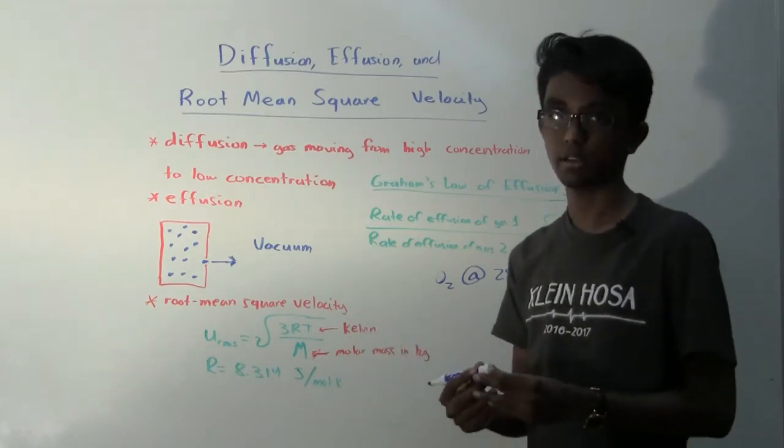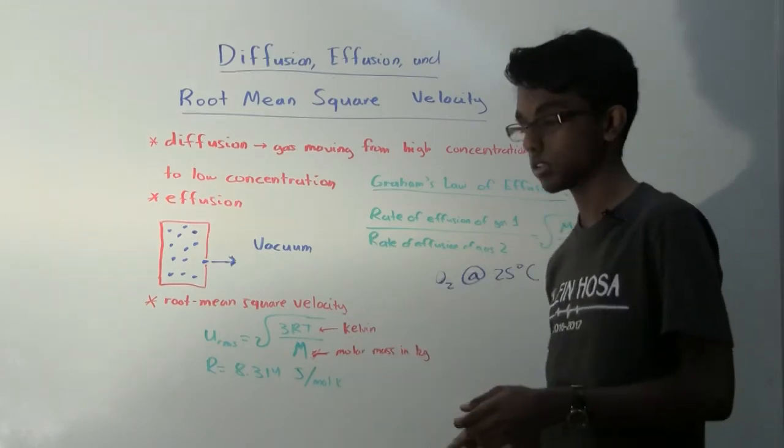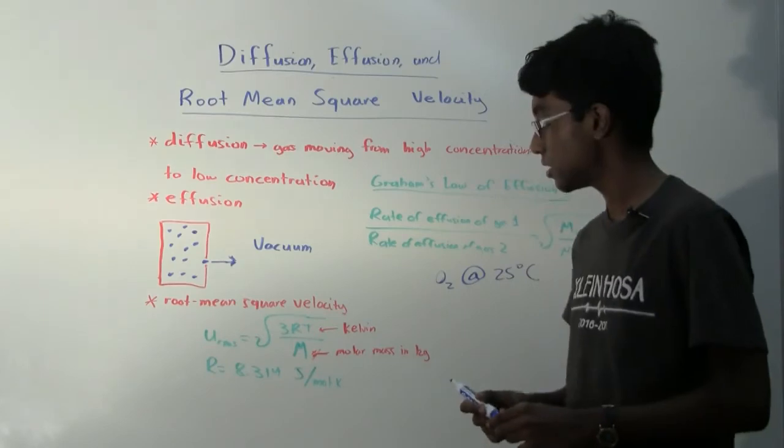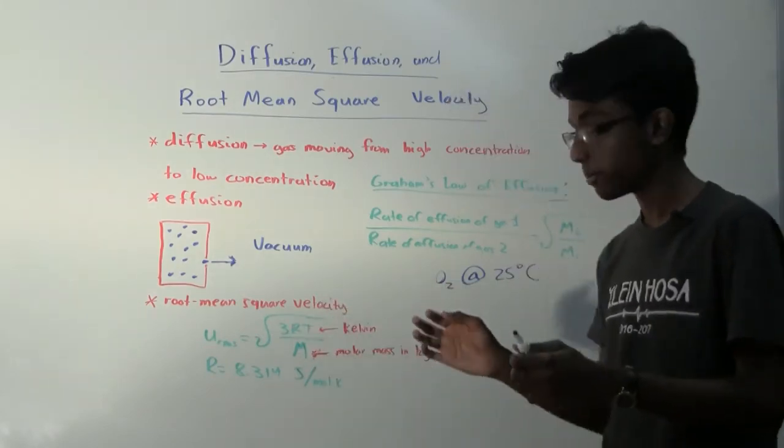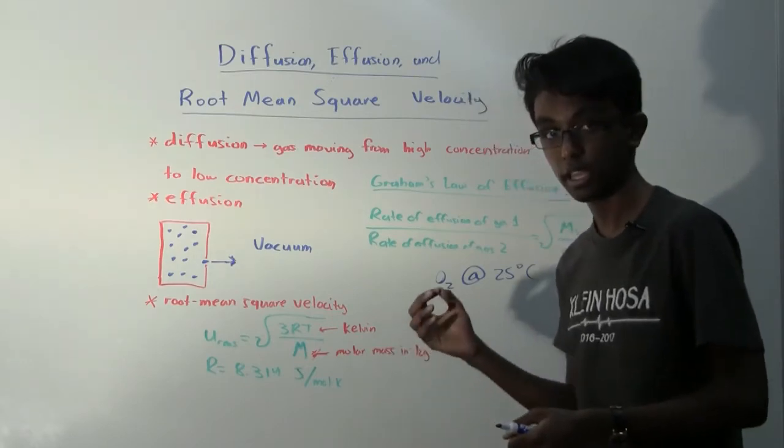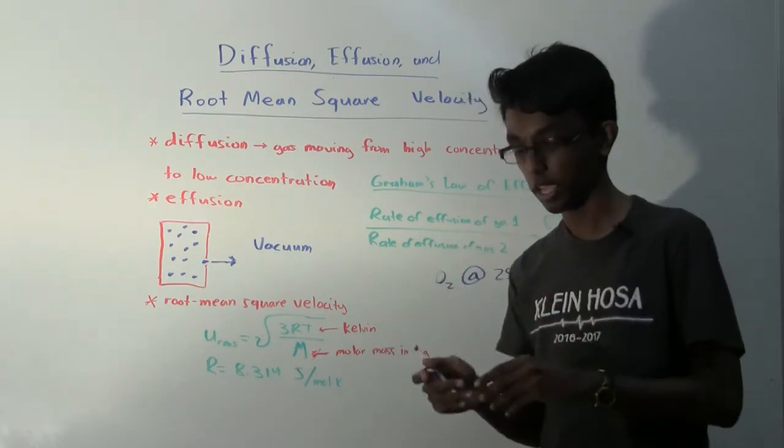Times the temperature in Kelvin. If you haven't realized already, when we're talking about gases, we're always talking about Kelvin temperature, not Celsius. So 3RT divided by the molar mass, but this molar mass has to be in kilograms, not in grams. Molar mass in kilograms. Don't forget.